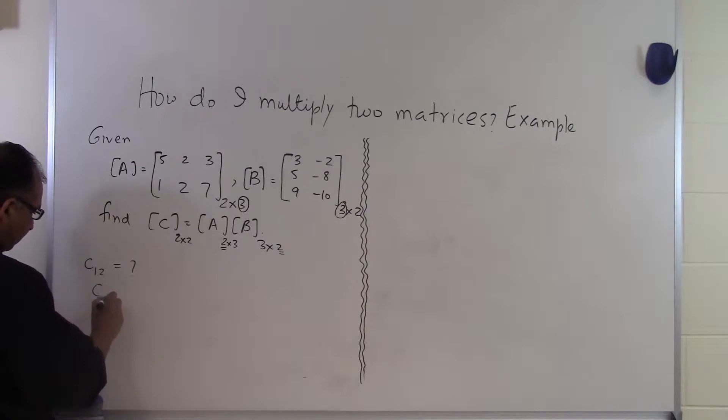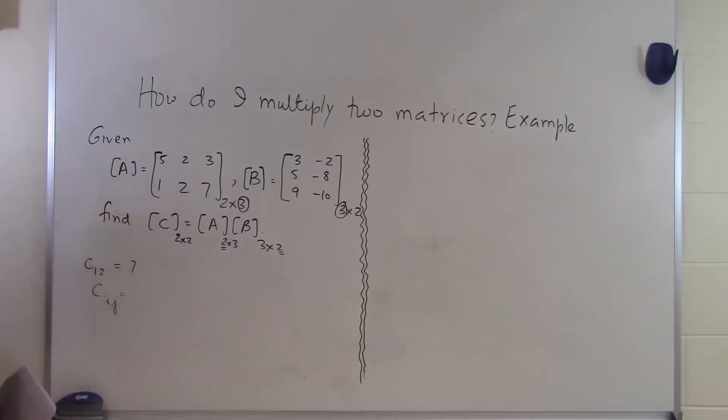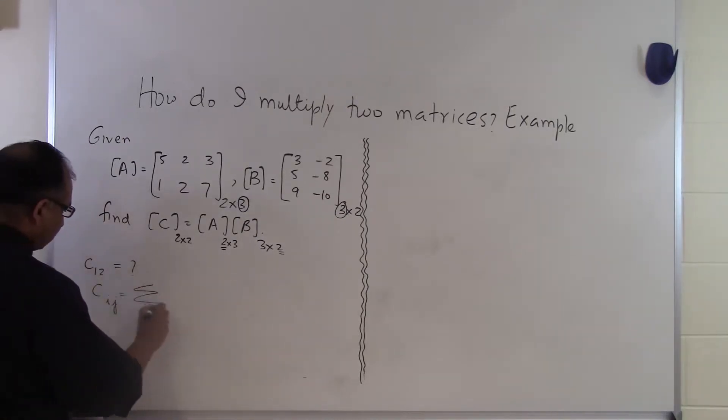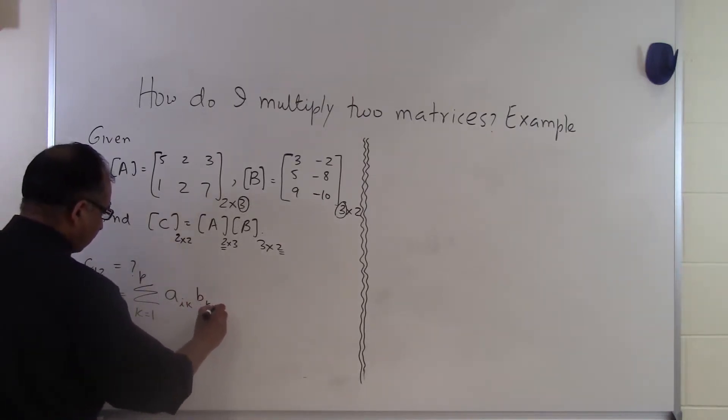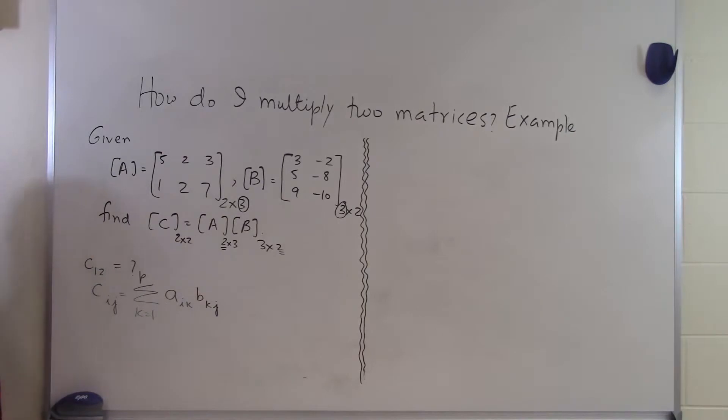So if I go from the definition of my Cᵢⱼ, which is the ith row jth element of C, it is given by summation K equals 1 to P, AᵢₖBₖⱼ. So if I want to find the ith row jth column of C, it is given by this summation right here.